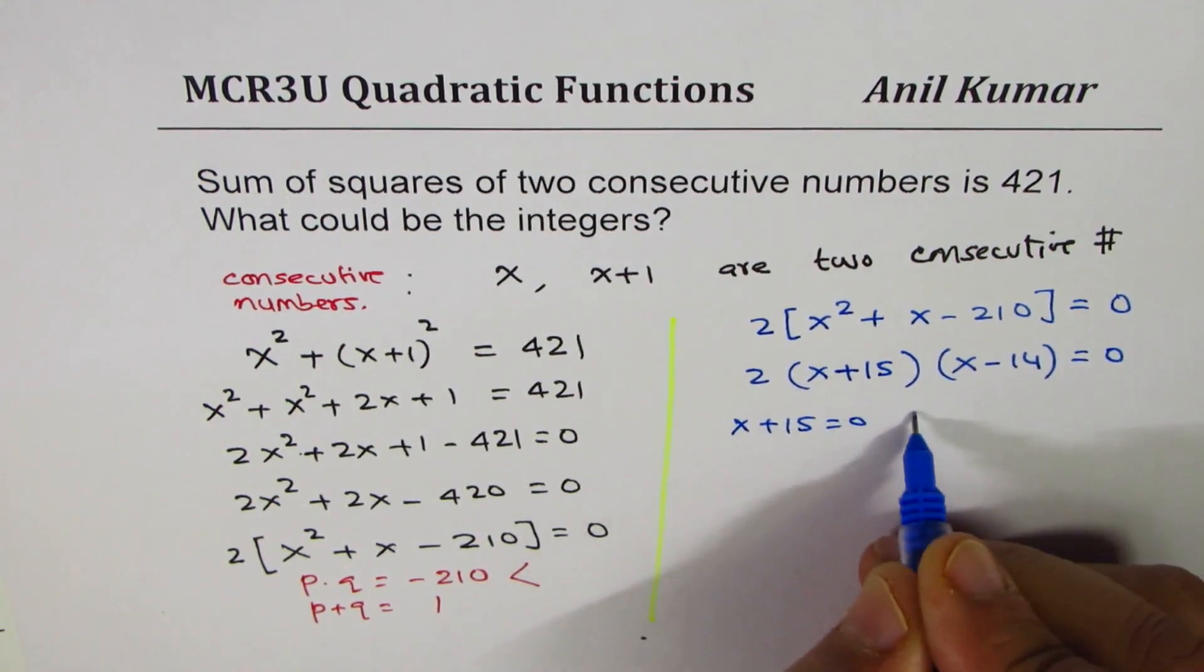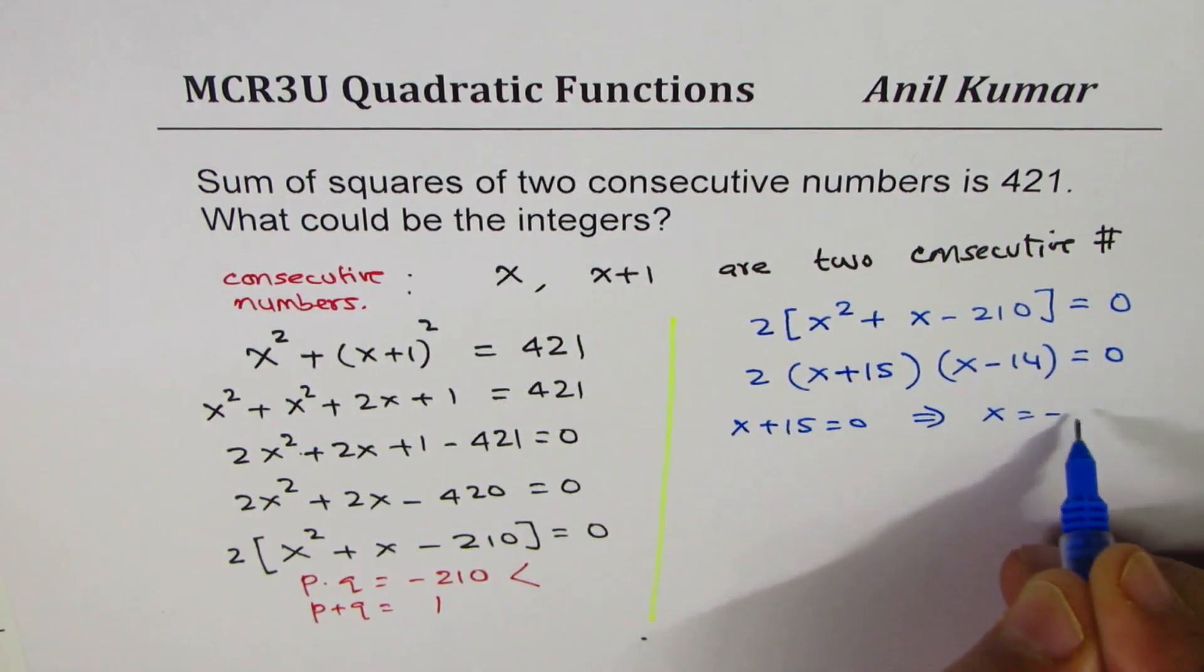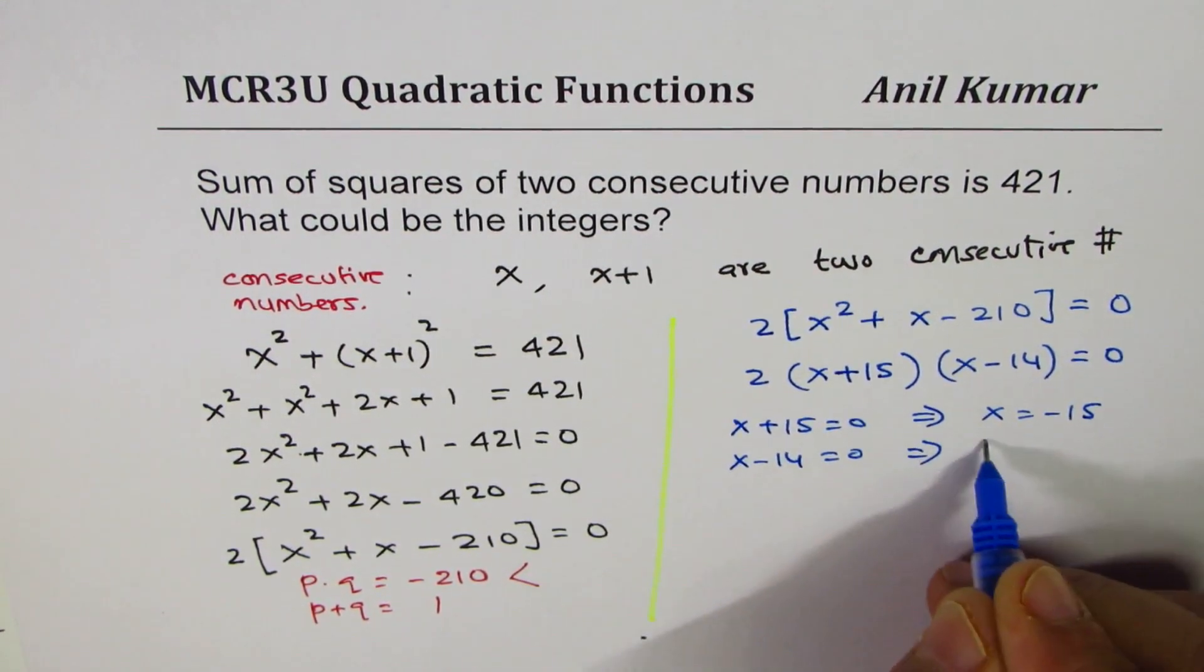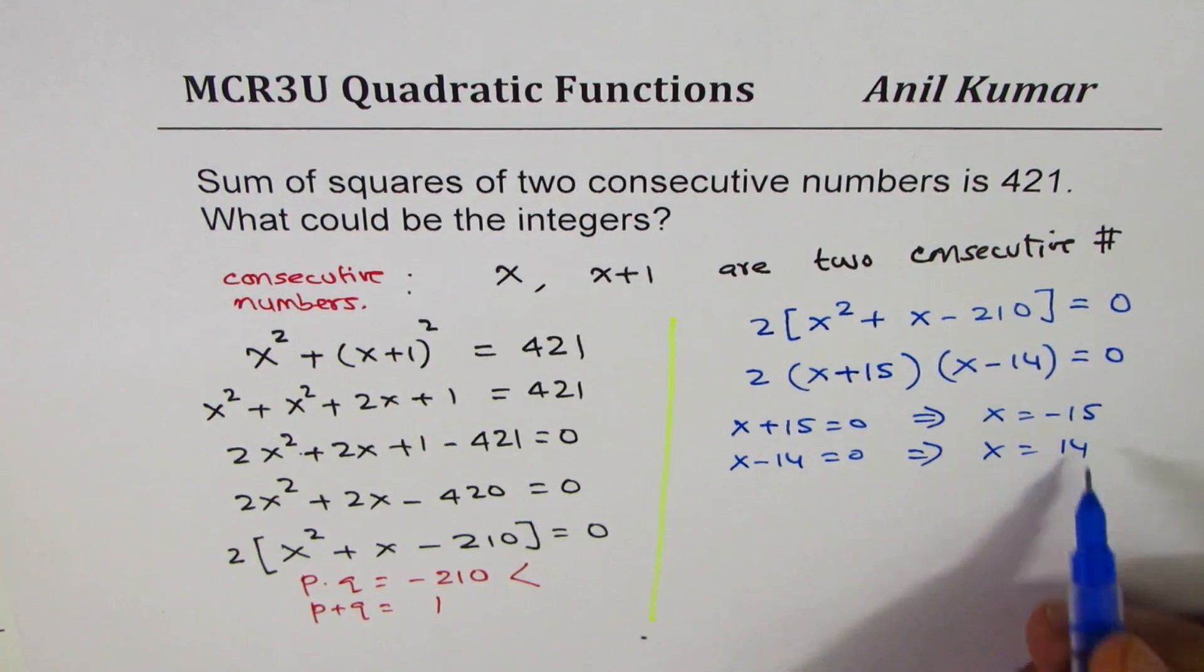x plus 15 equals to 0 gives you x equals to minus 15, and x minus 14 equals to 0 gives you x equals to 14. So these are two possible solutions and so we get two sets of solutions, correct?